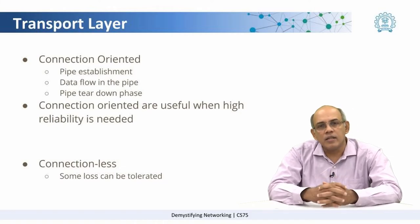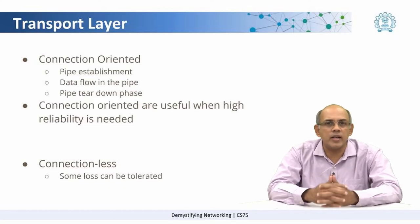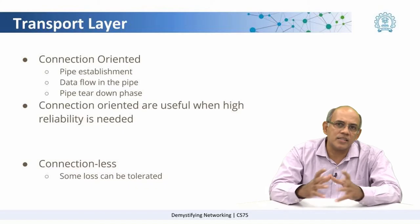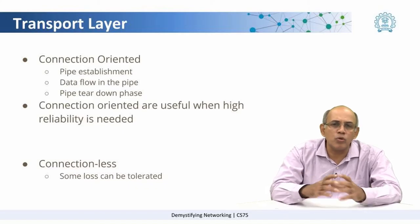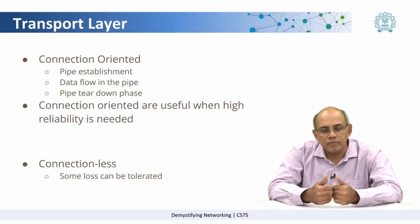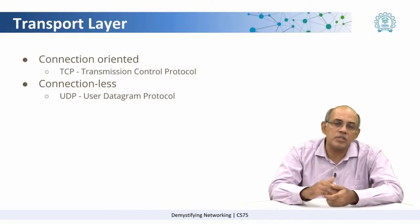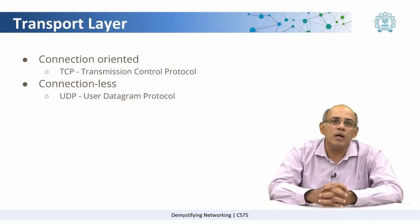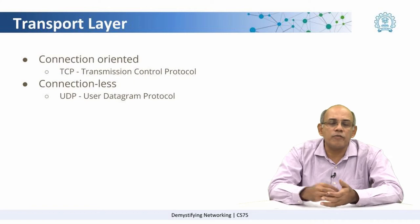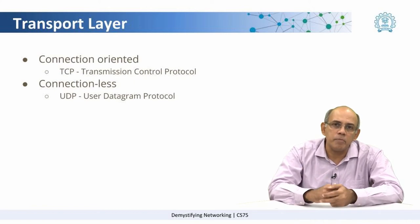On the other hand, there are also connectionless protocols, in which case there is some loss which can be tolerated by the system. In such systems, there is no notion of a connection setup or a connection teardown. The examples of these protocols are: in the case of connection-oriented, we have TCP, which is called Transmission Control Protocol, and in the case of connectionless, we have UDP, which is called User Datagram Protocol.